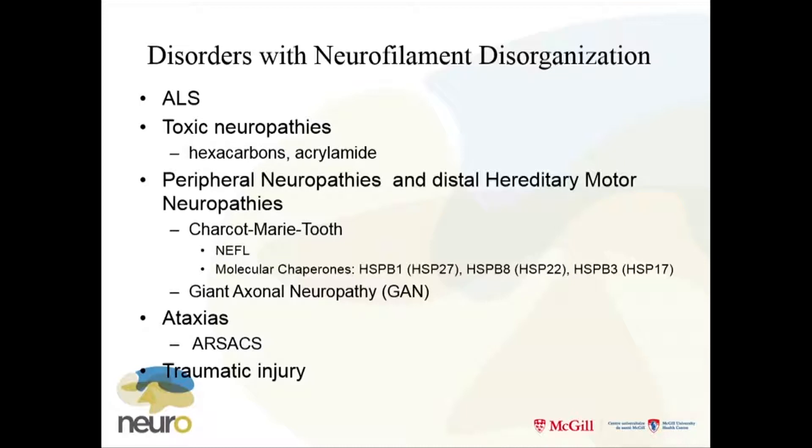After I got away from the neurofilament field — we all kind of fled for a while, except Ralph — I started studying molecular chaperones. I thought heat shock proteins should be important because they're important for folding misfolded proteins and either restoring their function or getting rid of them through the proteasome. There are mutations in several of these small heat shock proteins in CMT: HSP27, HSP22, HSP17.